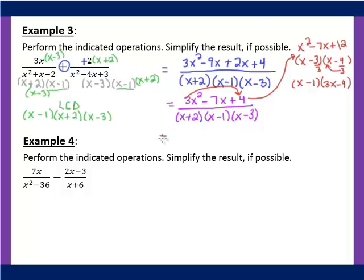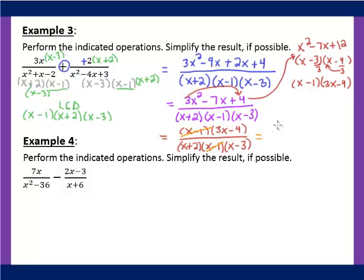So on top instead of 3x² minus 7x plus 4 we have (x minus 1)(3x minus 4) over (x plus 2)(x minus 1)(x minus 3). Now that we've factored we can see the (x minus 1) cancels out, making it all worth it. We can't factor further and there's nothing else to cancel, so that is our best answer.